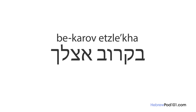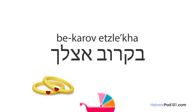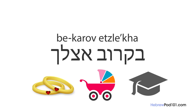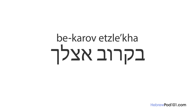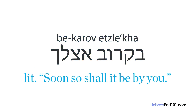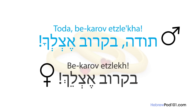This next expression comes in handy when celebrating a happy occasion such as a wedding, engagement, childbirth, or graduation. When someone congratulates you, you can answer 'bekarov etzlecha,' literally meaning 'soon so shall it be by you.' For example, if you just got engaged and a single friend congratulates you, you can reply 'Todah, bekarov etzlecha.' To a female friend you will say 'bekarov etzlach.'